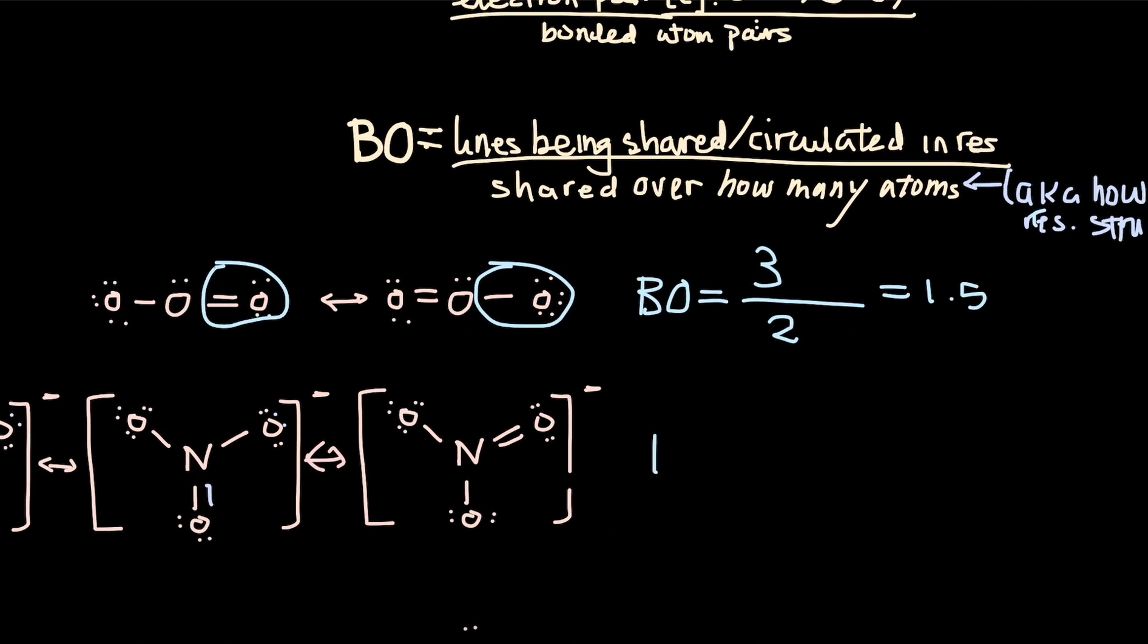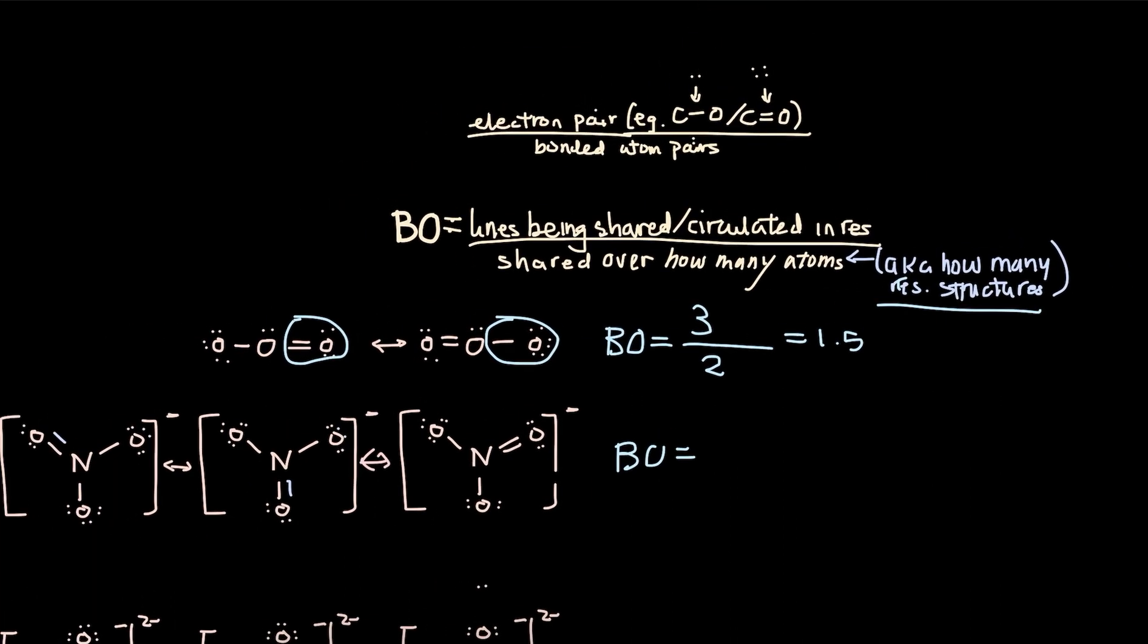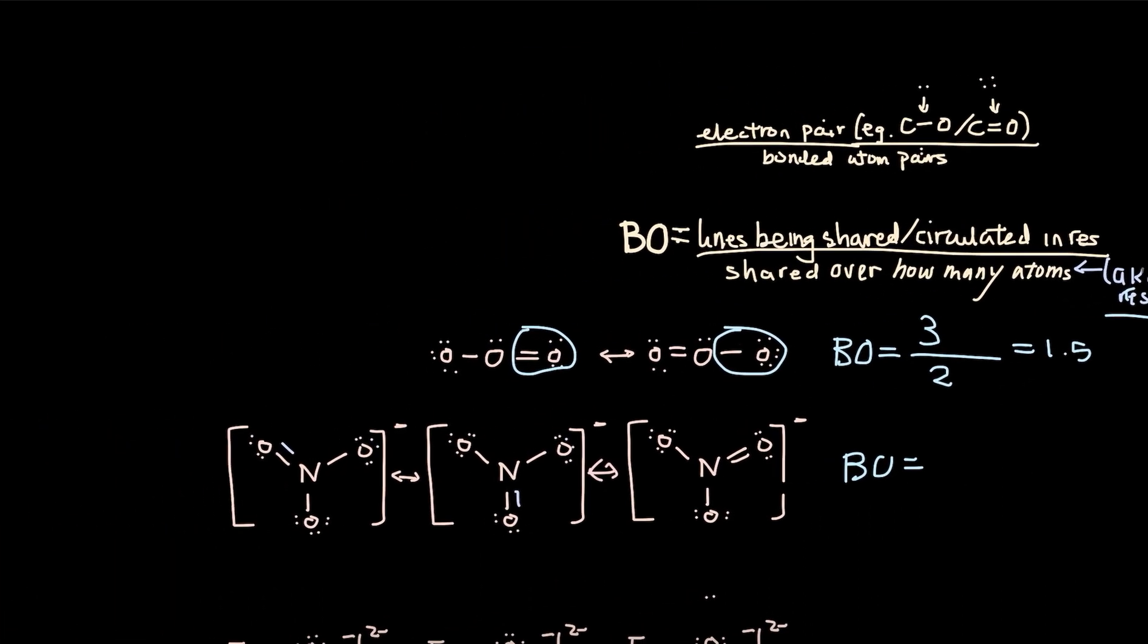Bond order. First of all, how many resonance structures are there in our example nitrates? Well, there are three drawings possible for this resonance structure. So it's going to be divided by three.